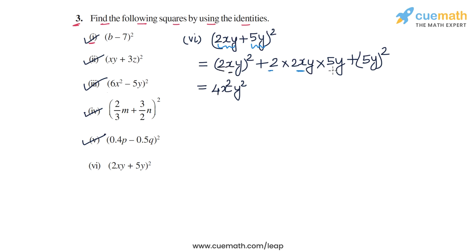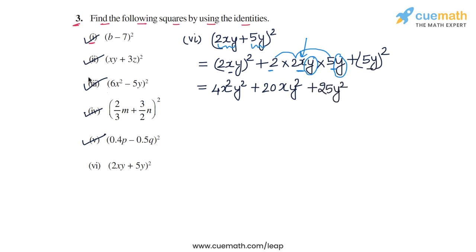For the middle term, 2 times 2xy times 5y: 2 times 2 times 5 is 20, and we have two repetitions of y and one of x, giving xy squared. So the second term is 20xy squared. The last term, 5y whole square, is 25y squared. So the expression 4x squared y squared plus 20xy squared plus 25y squared is the answer for part 6, and with this we have completed question number 3.